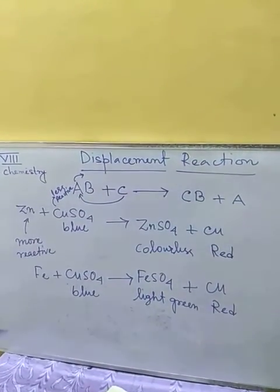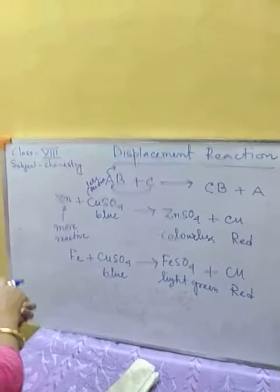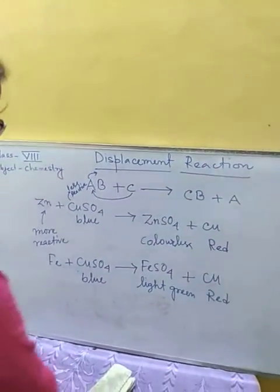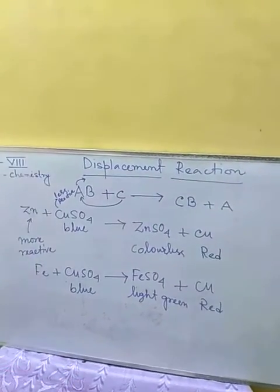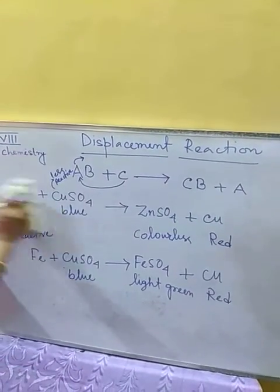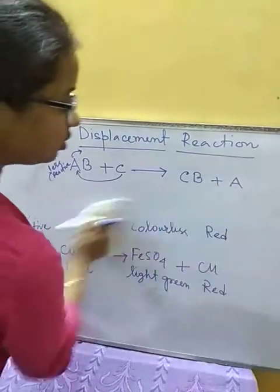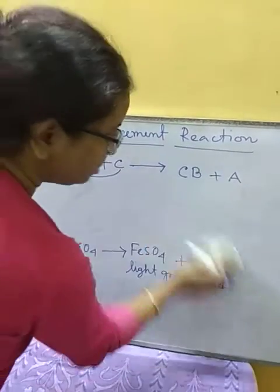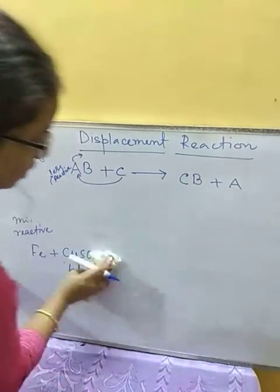Again, a red copper deposition is obtained. These are examples of displacement reactions. Another type is when any metal more reactive than hydrogen can displace hydrogen from an acid or compound.